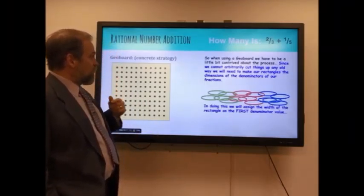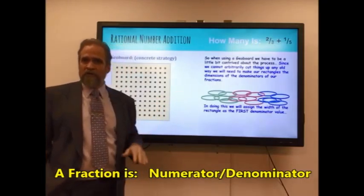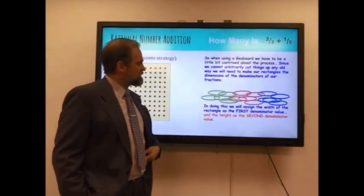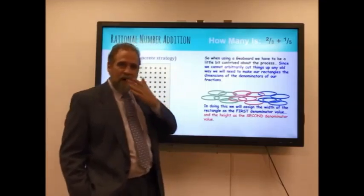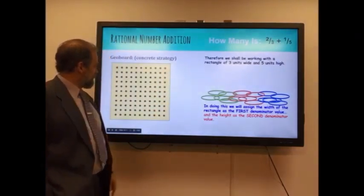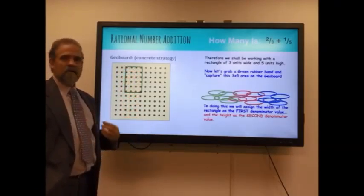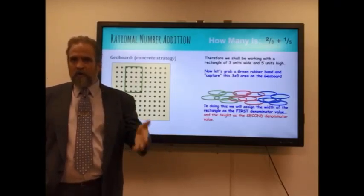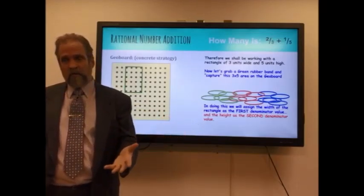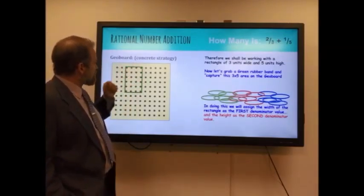So doing this, we will assign the width of the rectangle to be the first denominator. In this case, three. The denominator is the bottom number, numerator over denominator. So I'm going to have a three and I'm going to call the height the second denominator, which is five. So if I'm making a box or a rectangle on my geoboard, it's going to have a width of three and a height of five. So I'm going to go ahead and put a green rubber band around three by five.